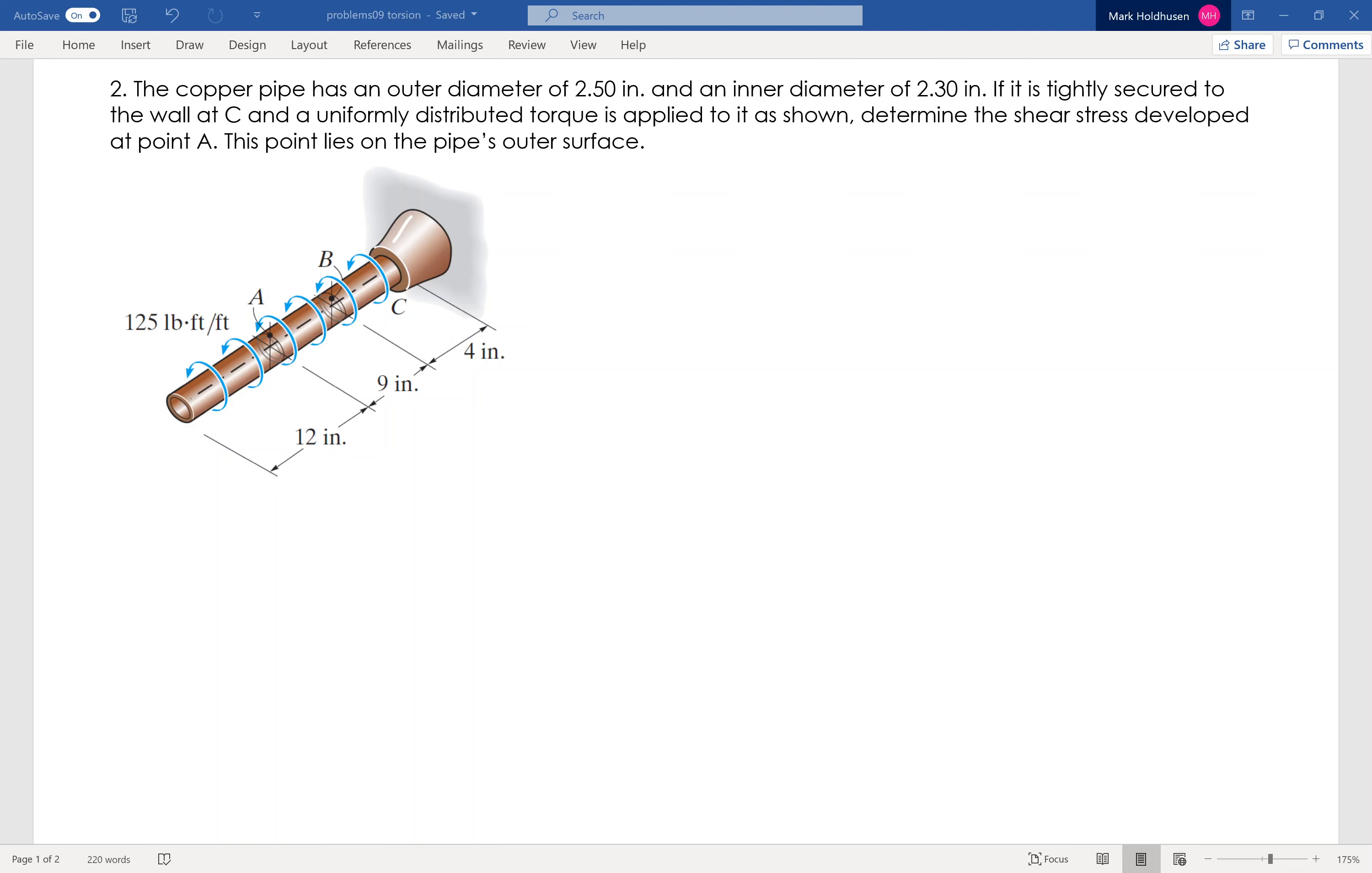On this one we've got a copper pipe, outer diameter of 2.5 inches, inner diameter of 2.3 inches. It's rigidly attached at C, and it's got a uniform distributed torque on it as shown.